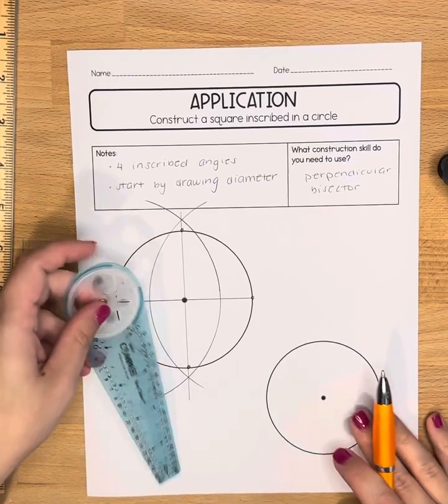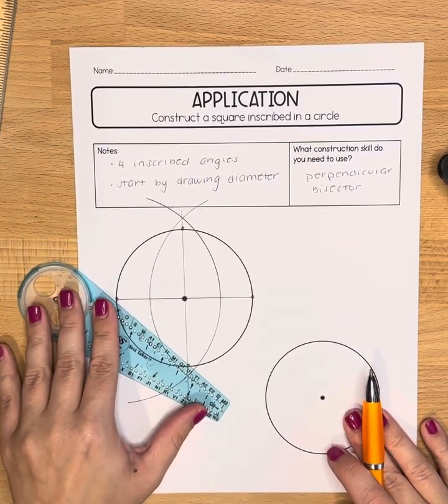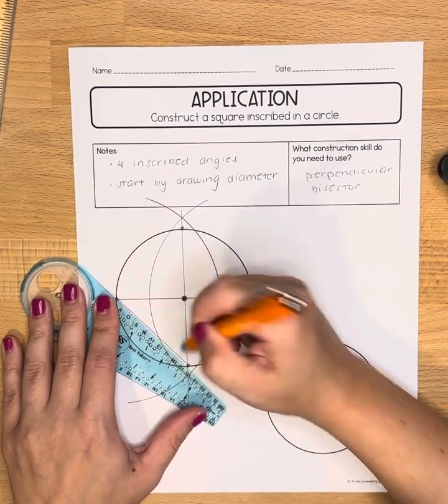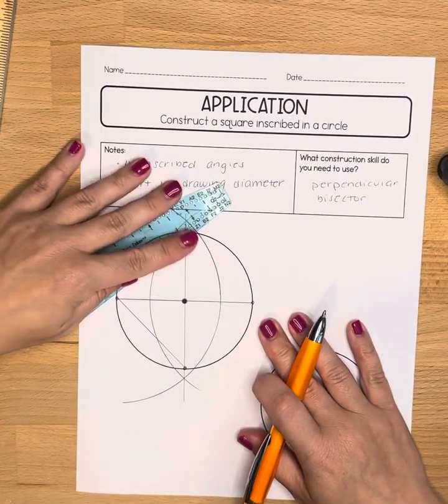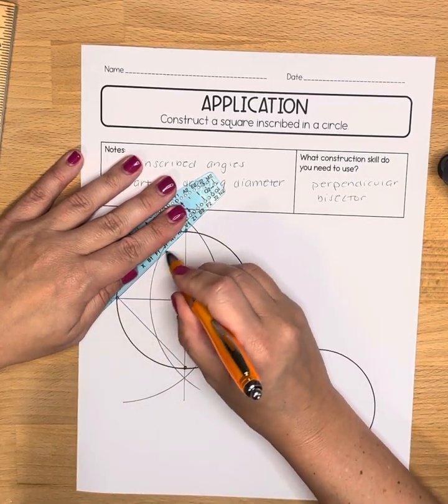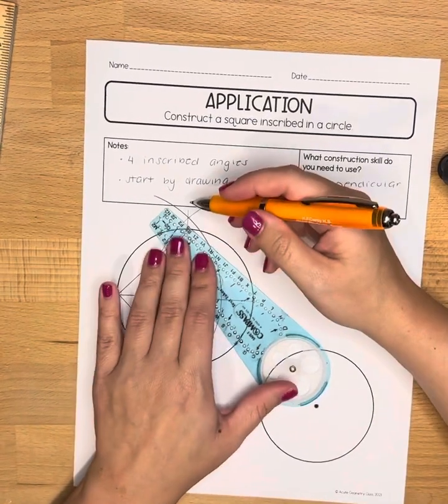Well remember what we're doing here, we have to make a square. So now use your straight edge to connect the four points that are on the circle. So you have the two from the diameter and you have the two from the perpendicular bisector.